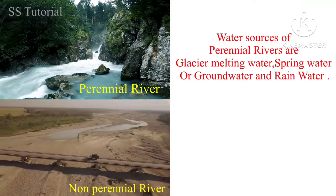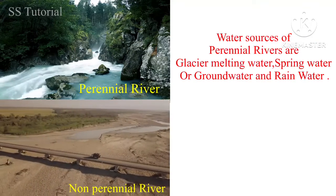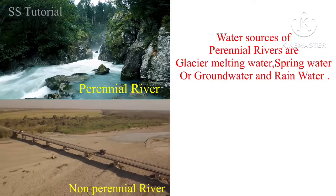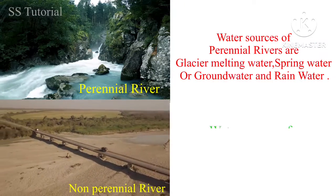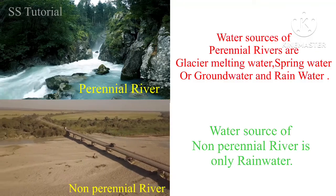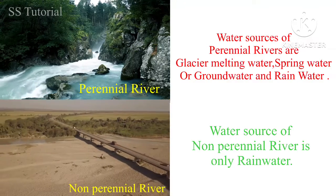The sources of water for perennial rivers are glacier melting water, spring water, and also rain water. Whereas the source of water for non-perennial rivers is only rain water.